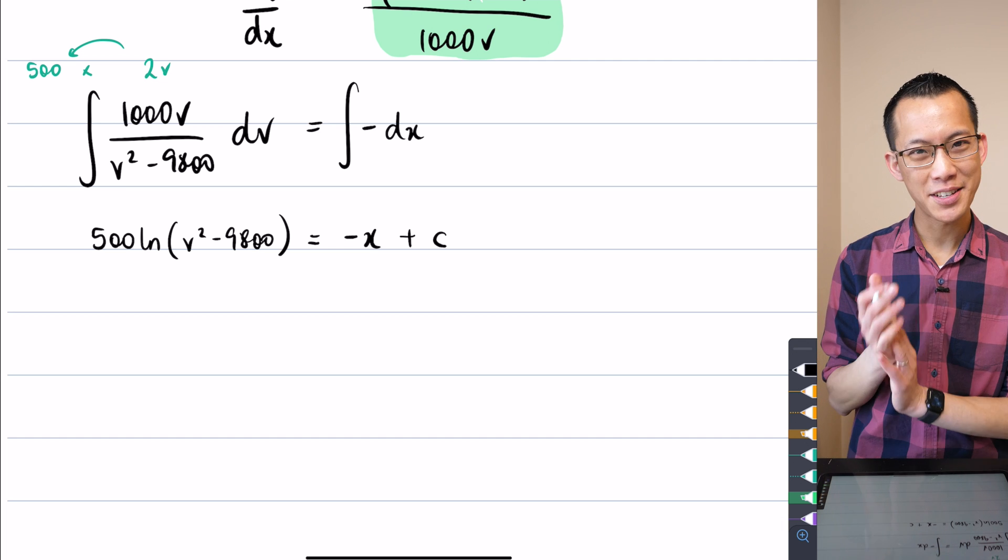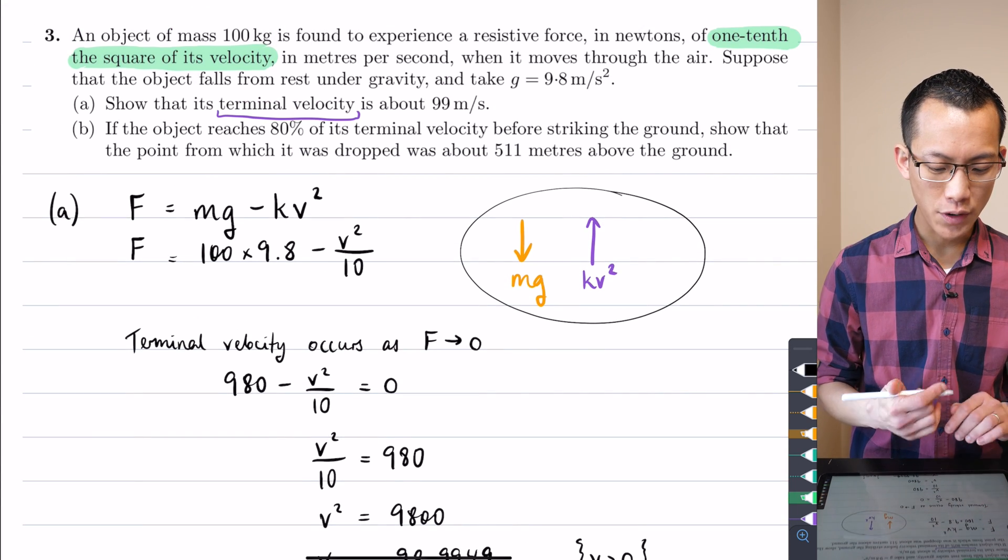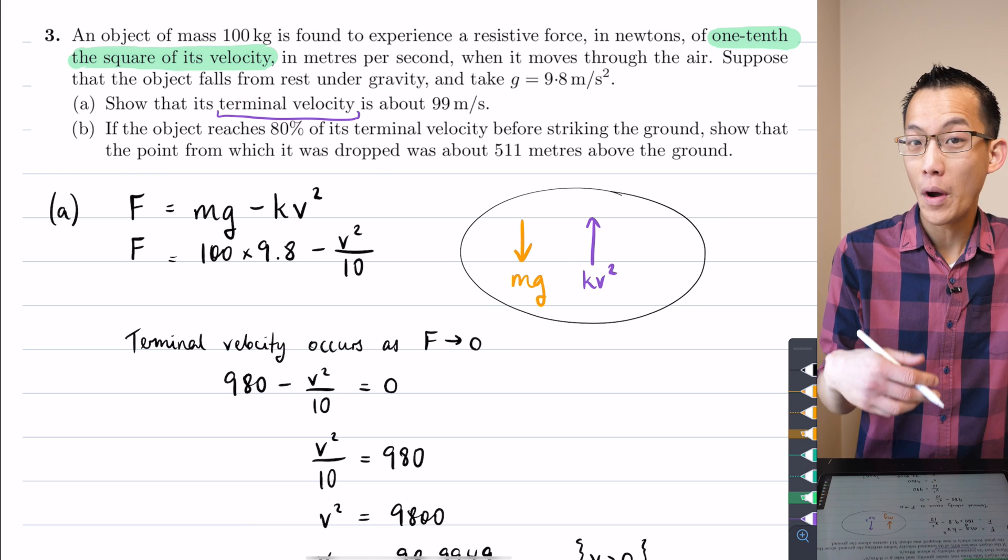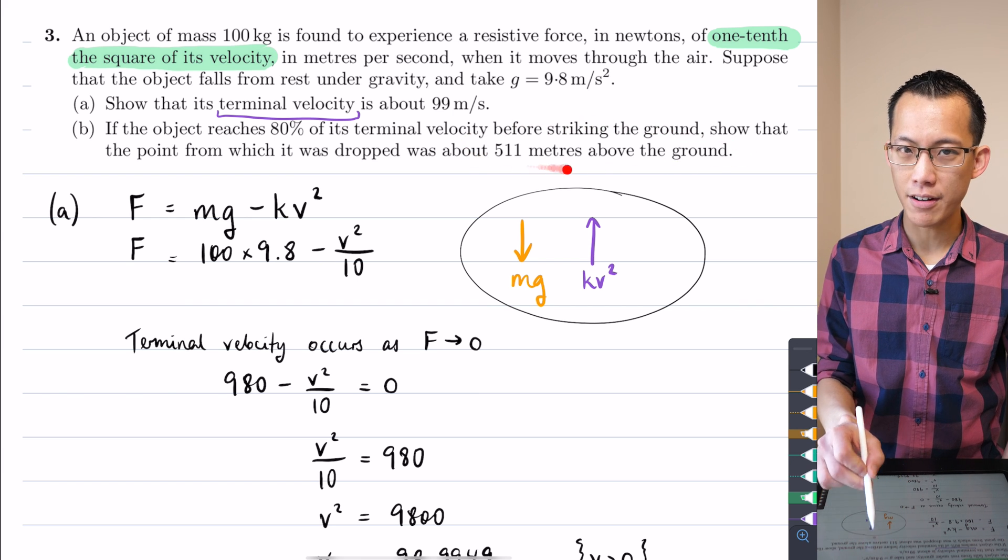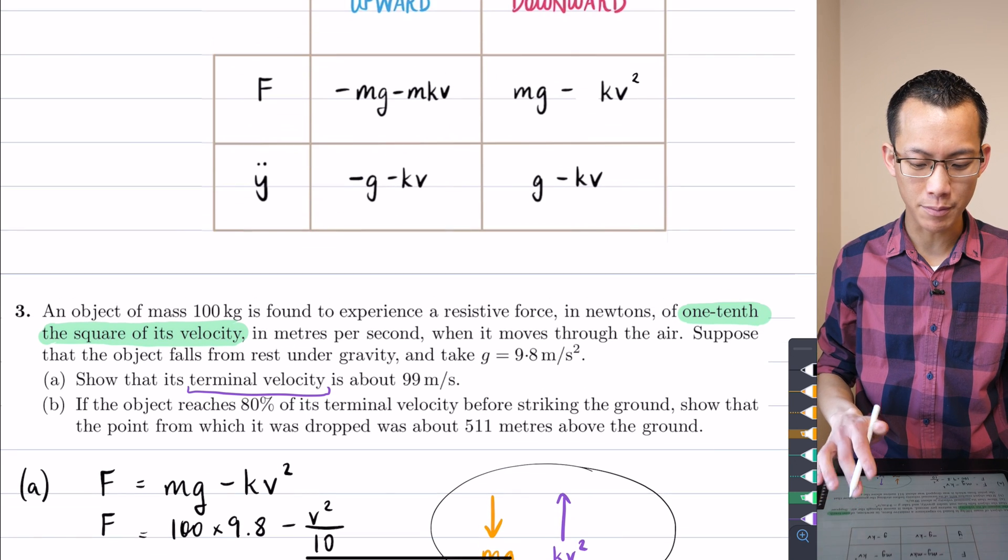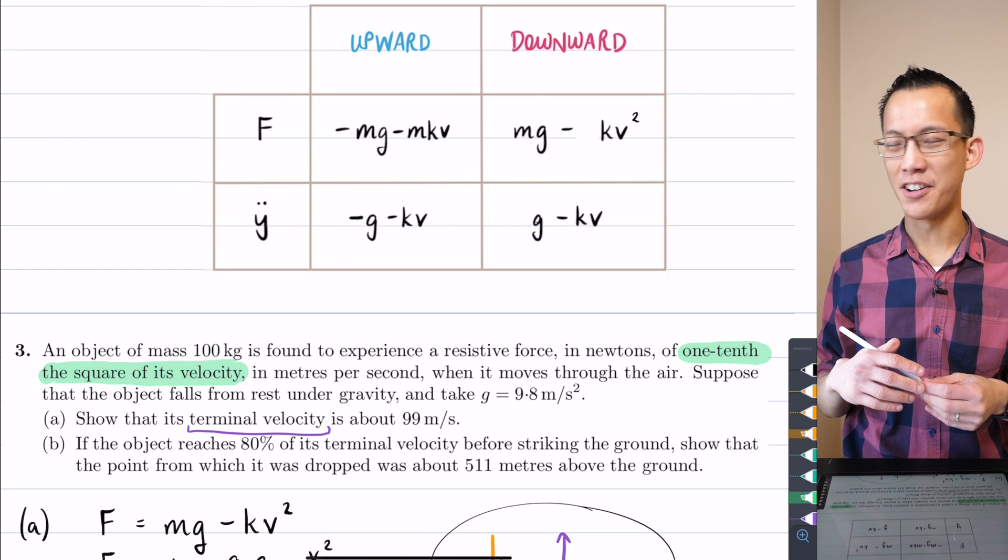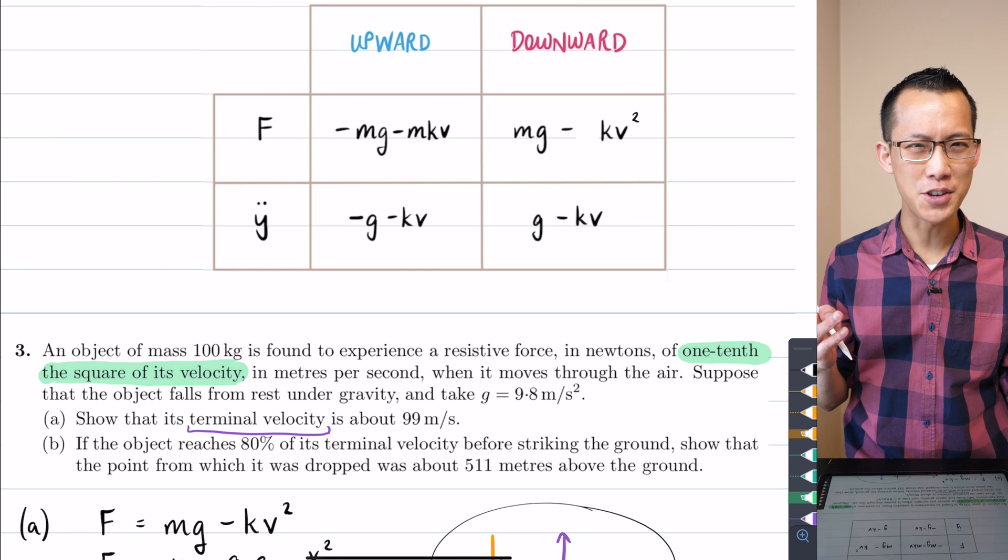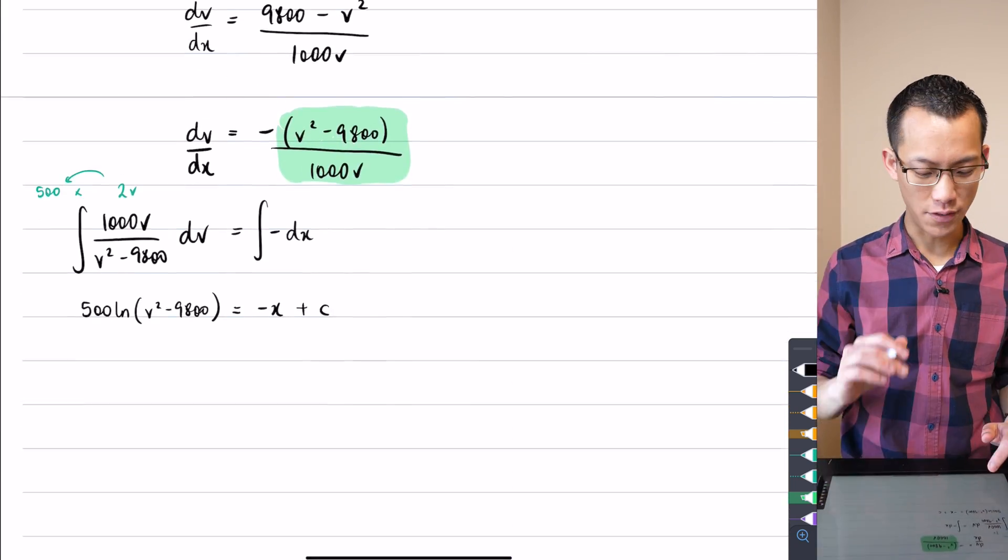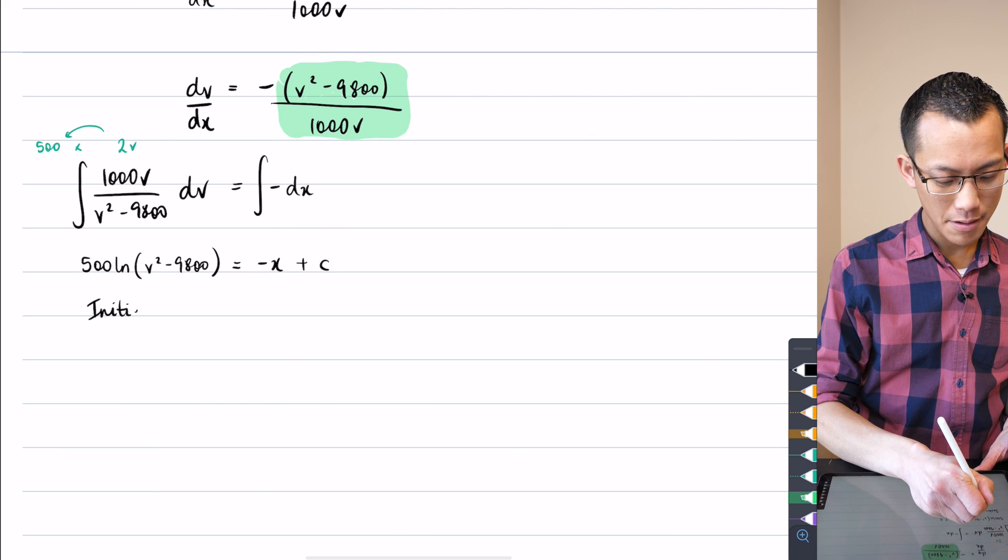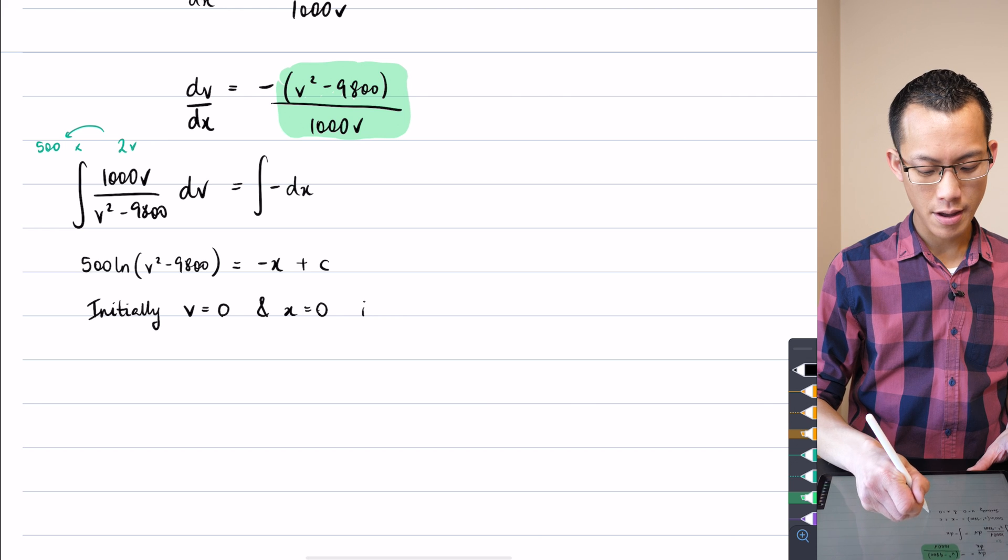Okay now at this point I've got this constant of integration to evaluate. How am I going to do that? Well I think back to what I know from the question. It says we've got this object and it falls from rest. Where does it fall from? The answer is it falls from somewhere and we want to show that that's 511 meters above the ground but we can just define that place to be wherever we want.